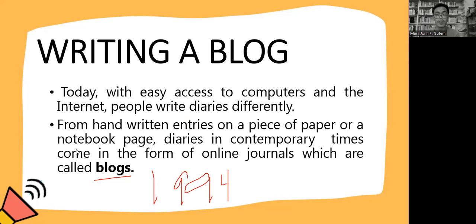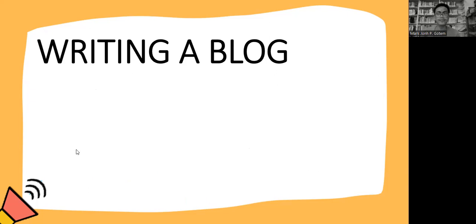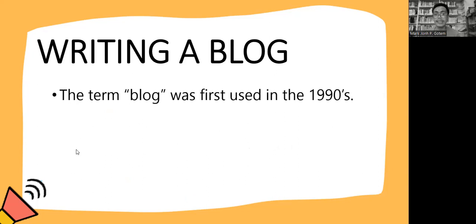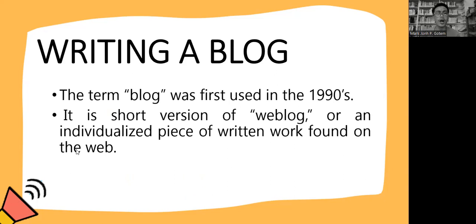In an online journal you could talk about your daily life or share about things that you were doing, and people saw an opportunity to communicate information using an online platform. The term blog was first used in the 1990s. It is a short version of 'web blog' — an individualized piece of written work found on the web, displaying information in reverse chronological order with the latest post appearing first at the top.